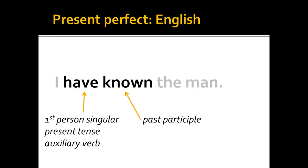This present perfect tense construction is essentially formed of two components: first, a past participle, and second, an auxiliary verb that agrees with the subject of the sentence.